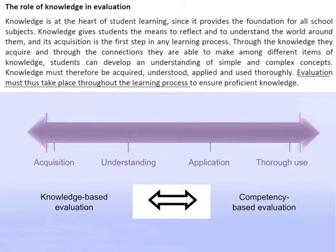This paragraph is taken from the framework. It tells us that evaluation must take place at all steps of the learning. At one end of the continuum, we have knowledge-based evaluation — for example, a verb test. At the other end of the continuum, we have competency-based evaluation — for example, evaluating a student while interacting orally, to see if the student can communicate.